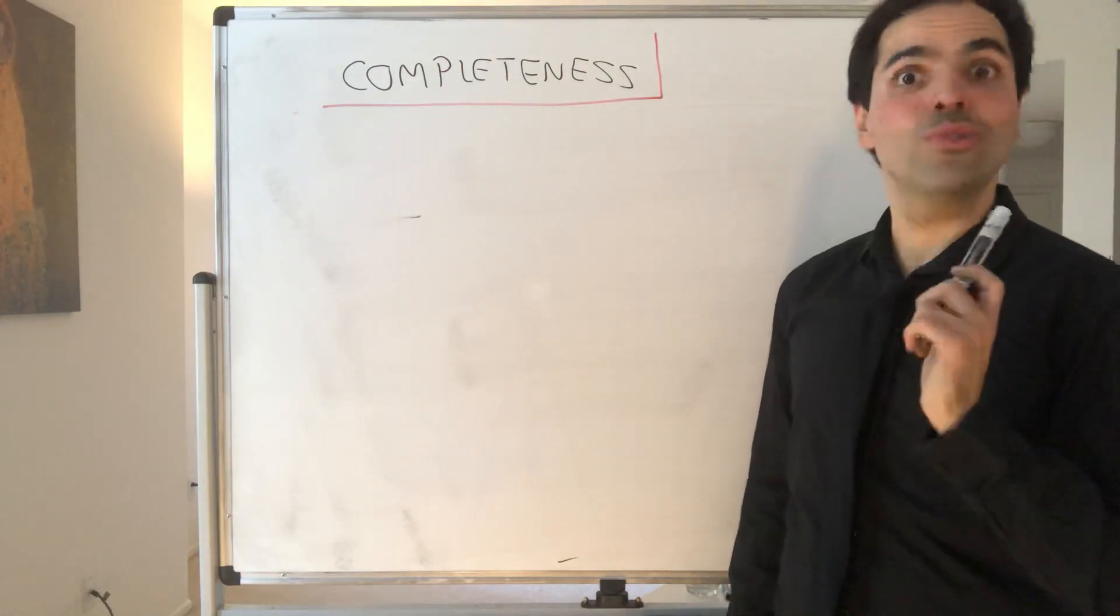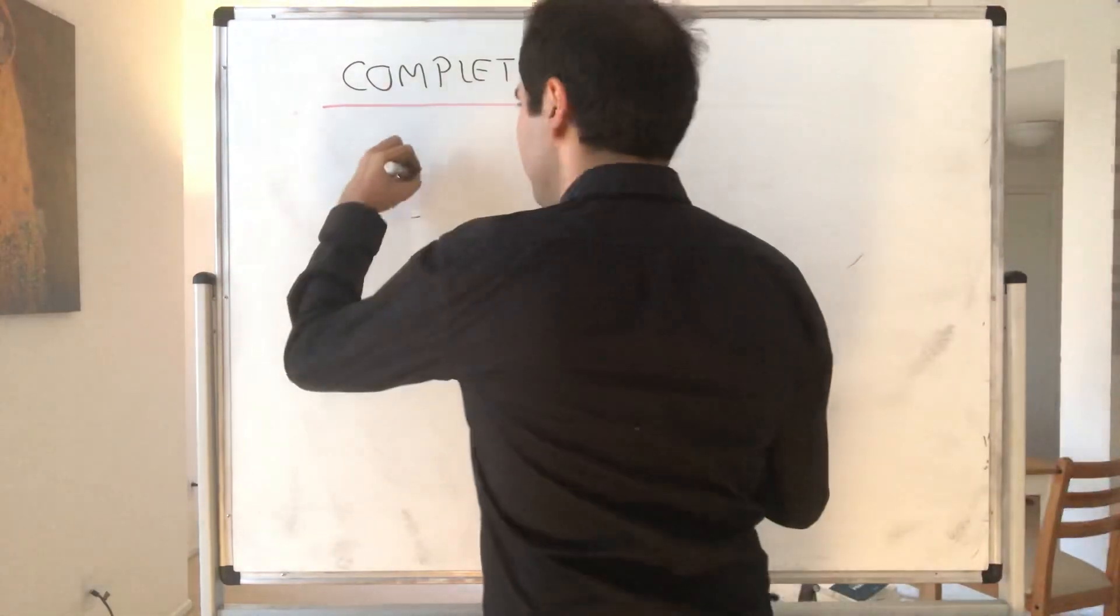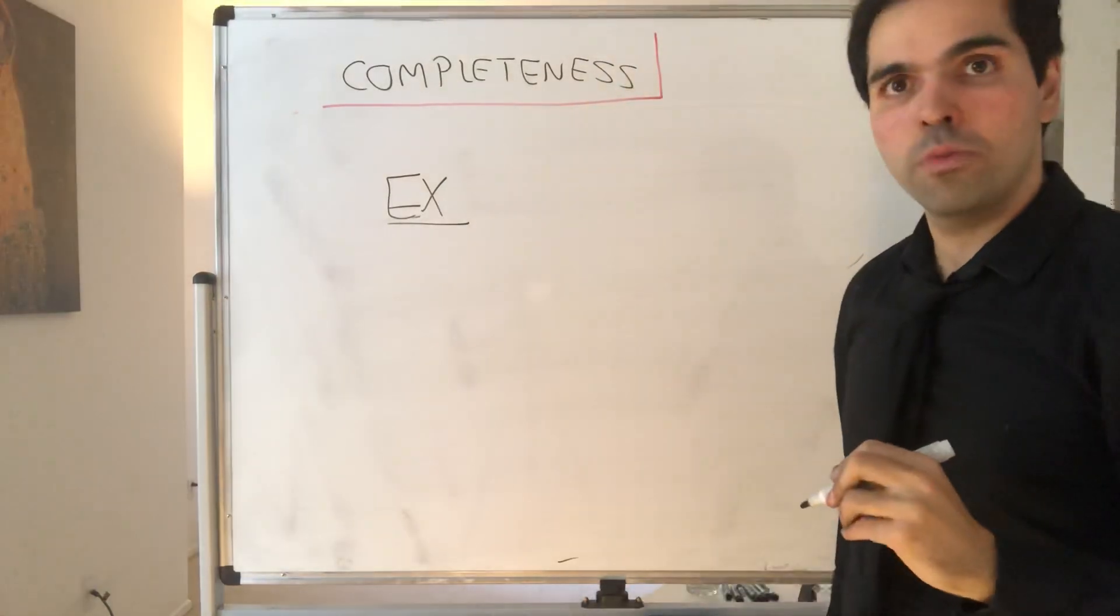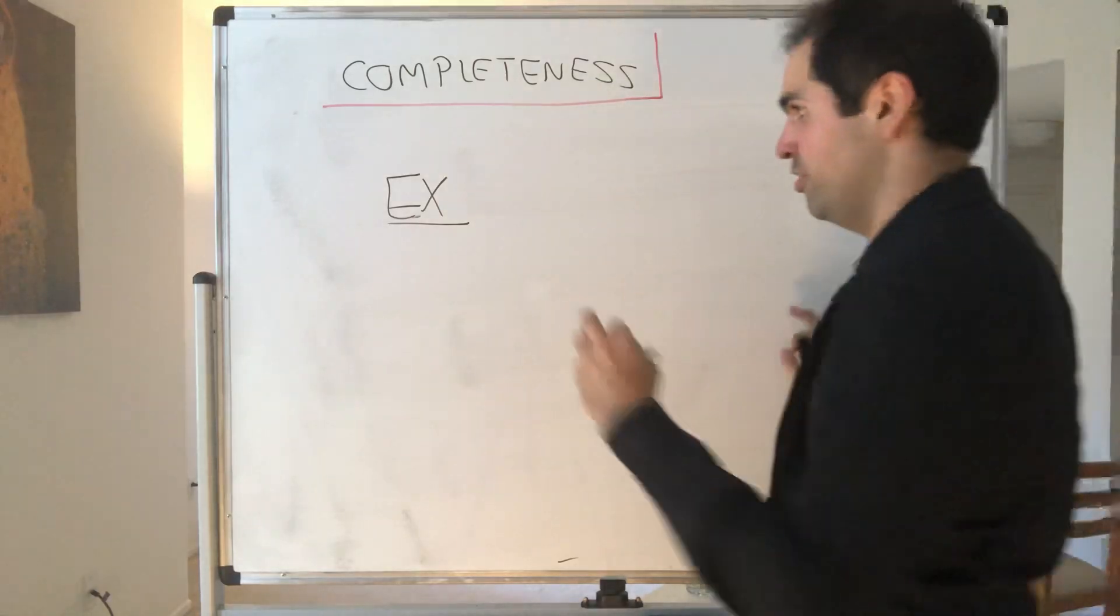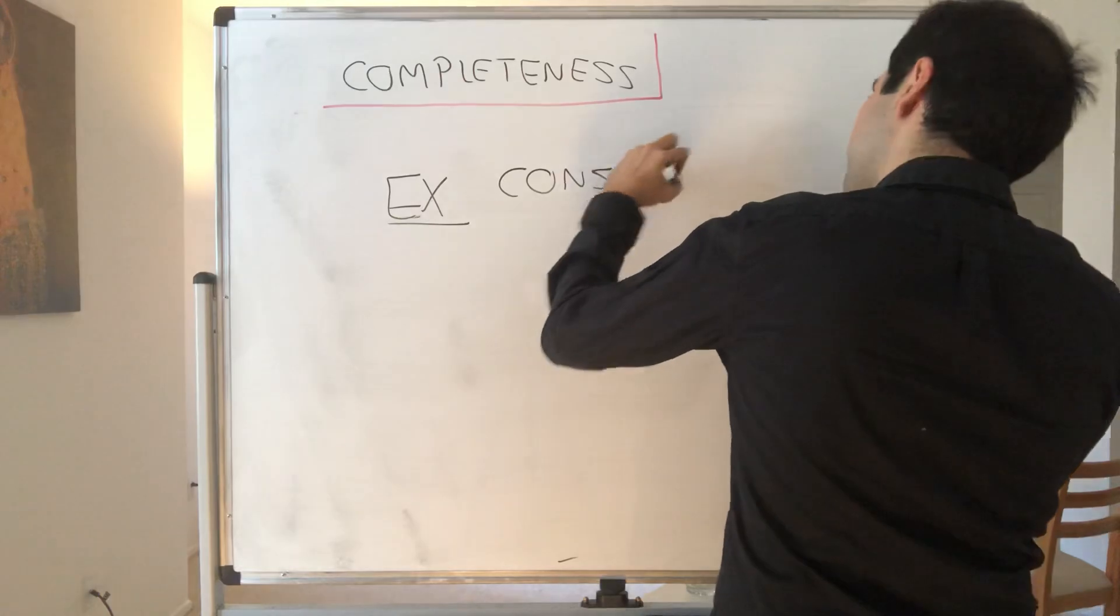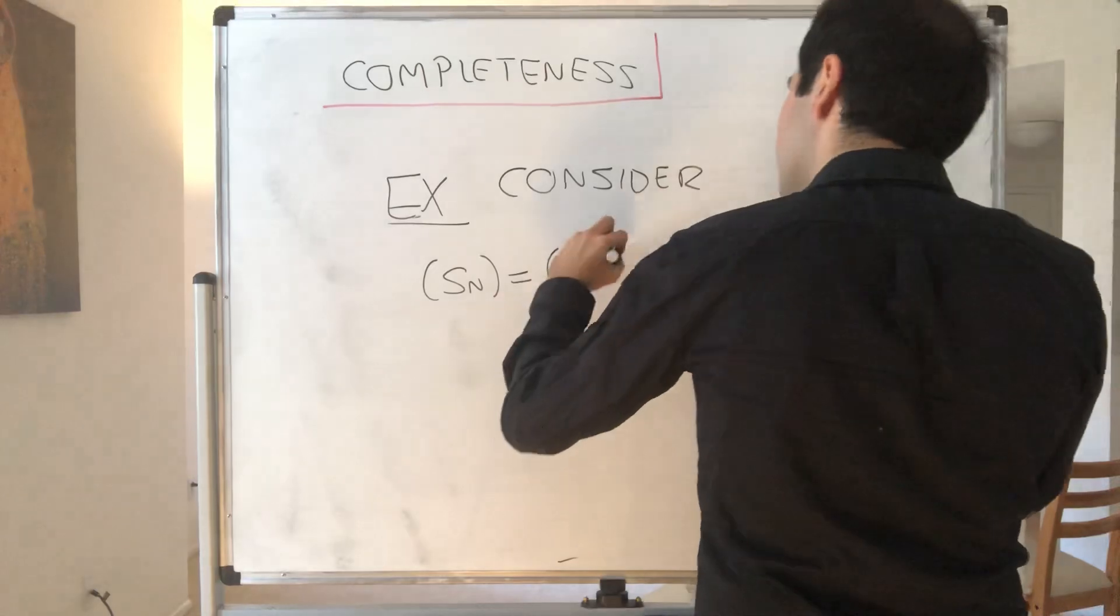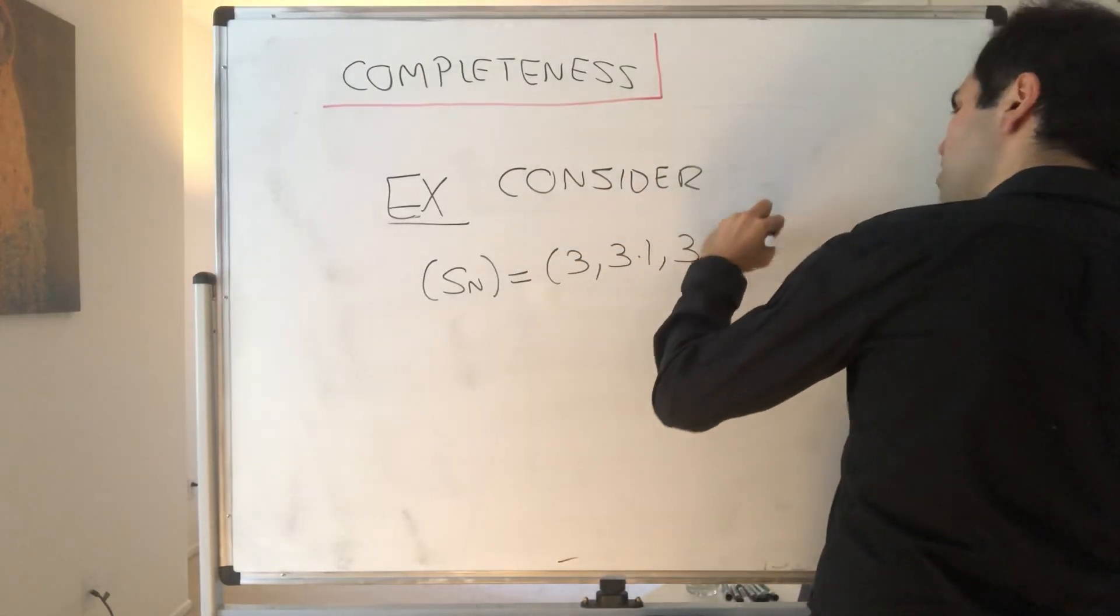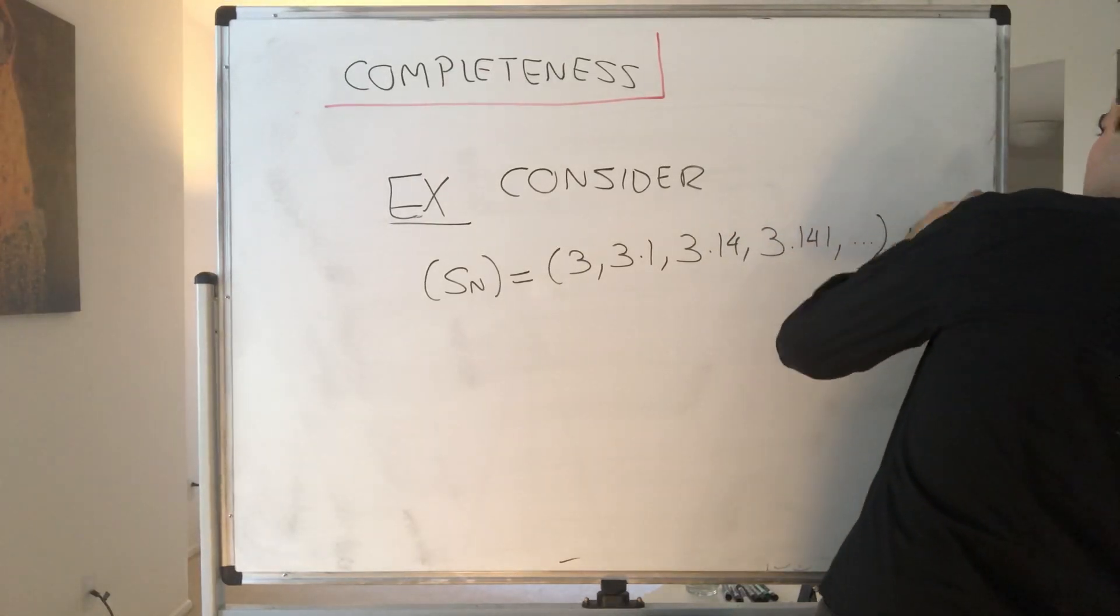And surprisingly, the answer is no. Consider the following example. Pretend for a second that the universe is the rational numbers. So the real numbers don't exist, we don't know about irrational numbers. And consider the following sequence Sn, which is 3, 3.1, 3.14, 3.141, etc., in the rational numbers.